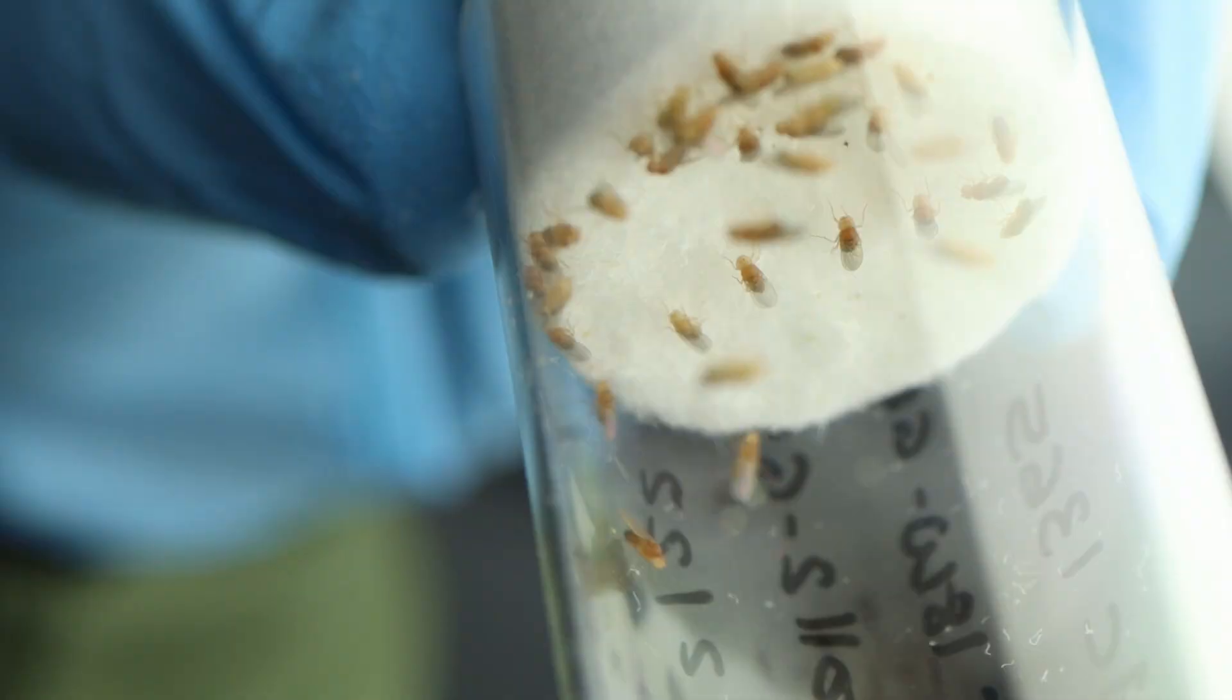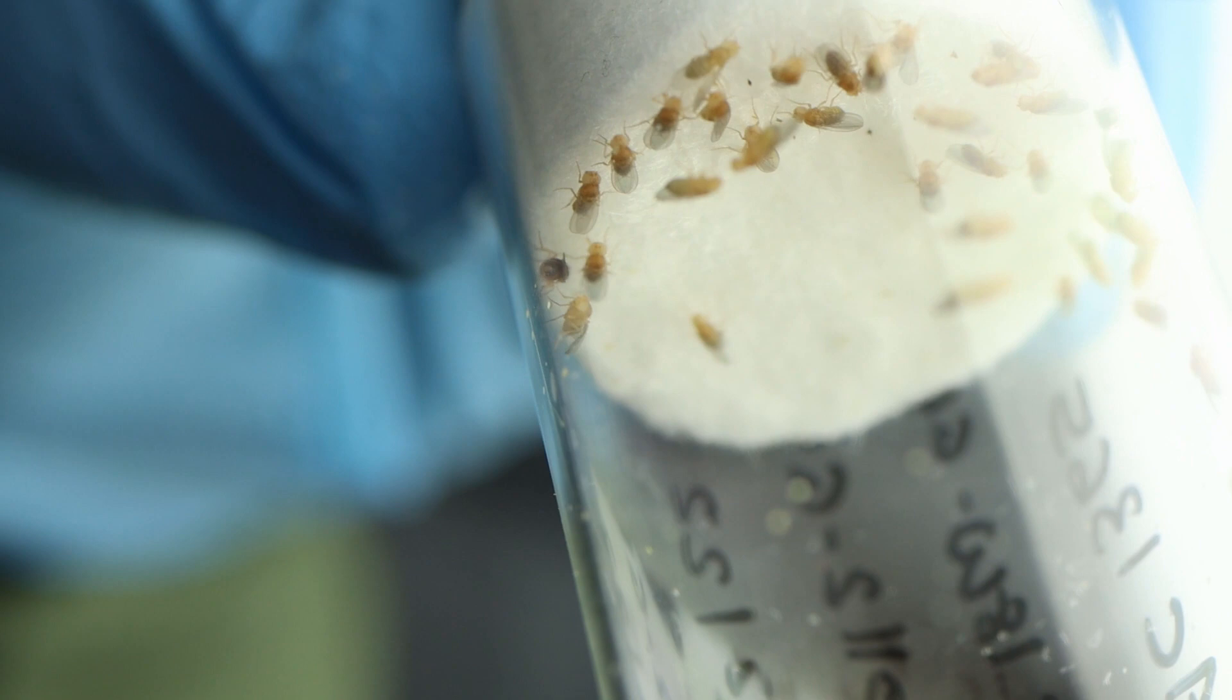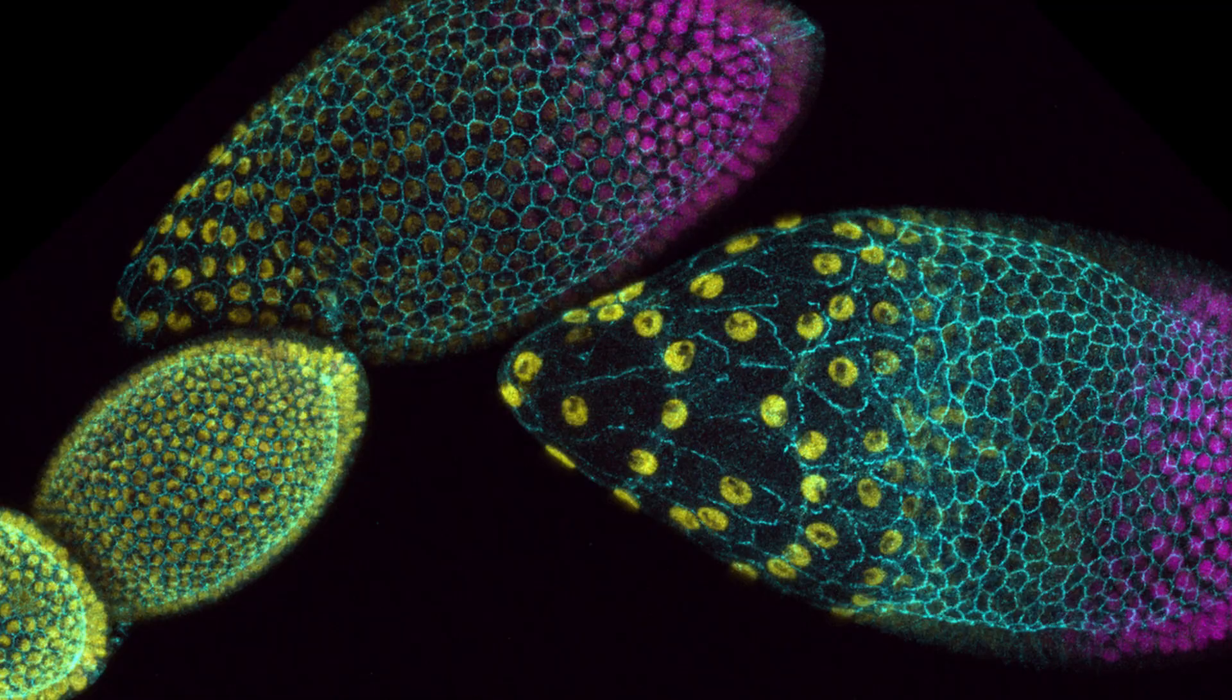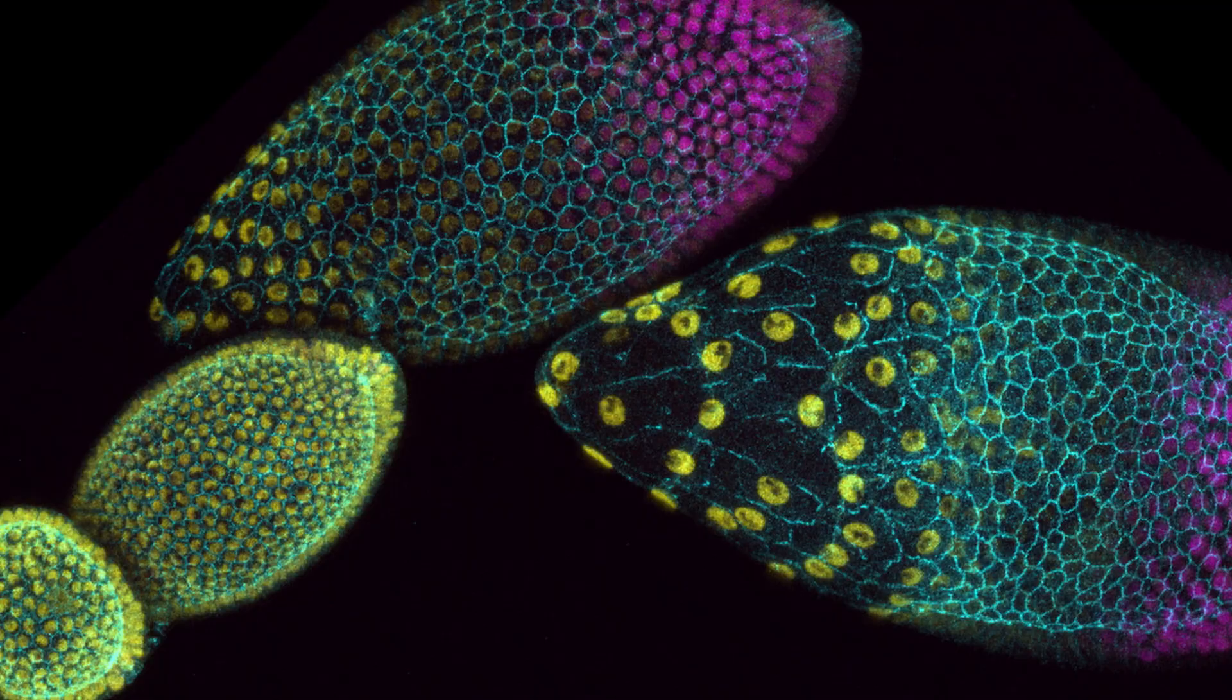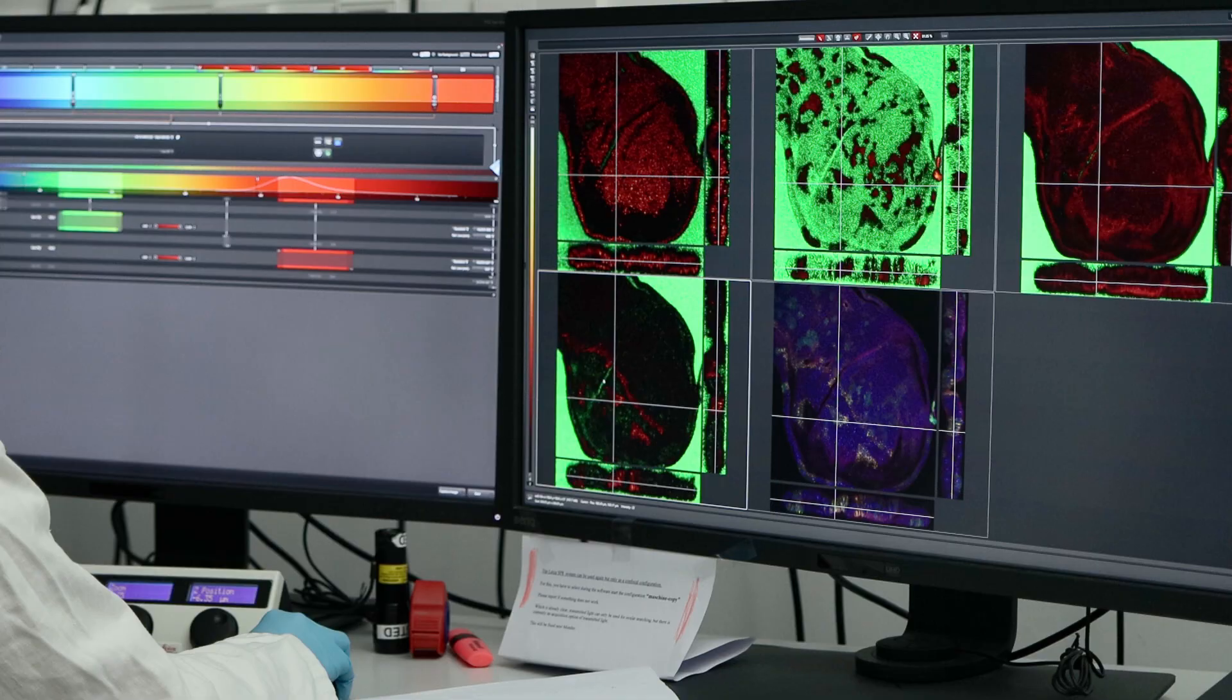Now we use the model system, Drosophila melanogaster, which is the fruit fly. And what we are trying to understand is how they use adhesion and cytoskeleton to create organ shape, but also how they use these two cellular structures to actually eliminate aberrant cells and suppress tumors in these tissues.